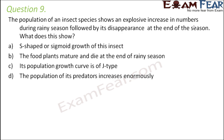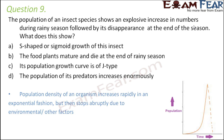Question number 9. The population of an insect species shows an explosive increase in numbers during rainy season, followed by its disappearance at the end of the season. The population suddenly increases and then drops abruptly. This is a J-type growth curve — shaped like the English alphabet J — so C is the right option.